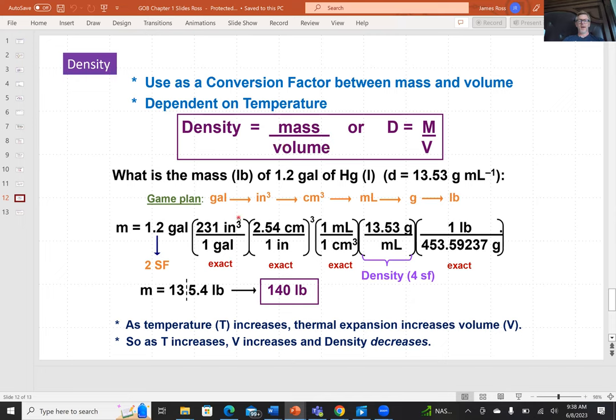Density is mass over volume. We can see here an example of how to use density. The example is kind of irrelevant. It's just to show the use of density in a calculation. What's the mass in pounds of 1.2 gallons of liquid mercury. We're told that the density of mercury is 13.53 grams per milliliter. Our game plan is to convert gallons to cubic inches, convert cubic inches to cubic centimeters, to convert cubic centimeters to milliliters, and then to grams, and then to pounds.